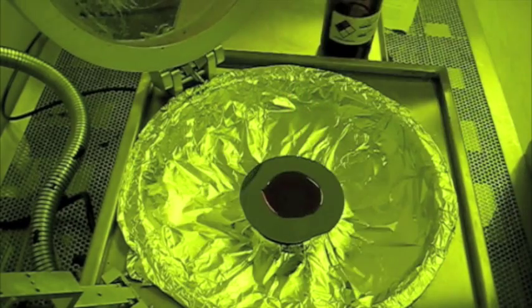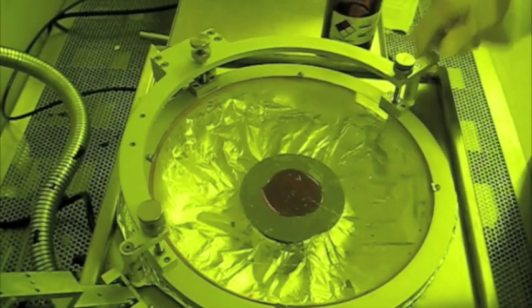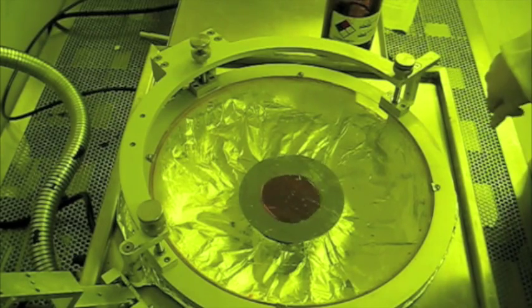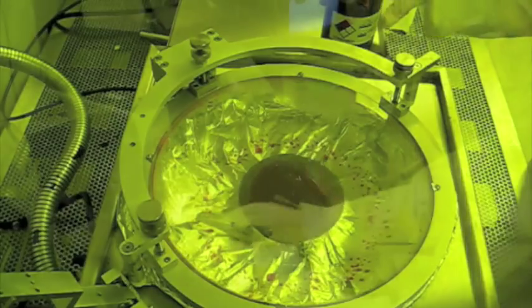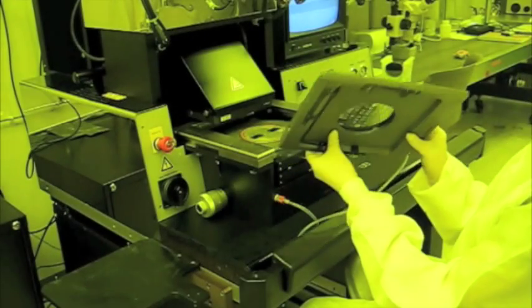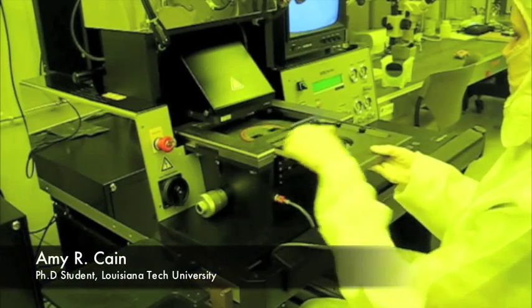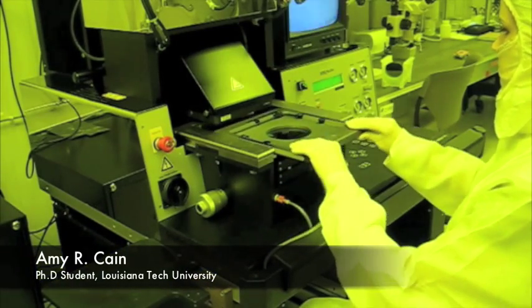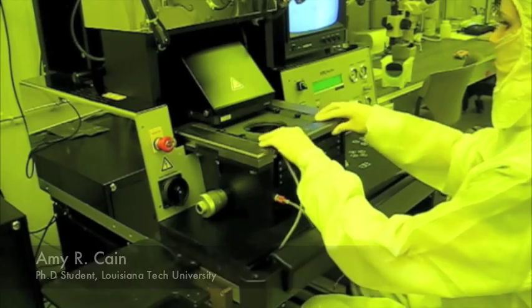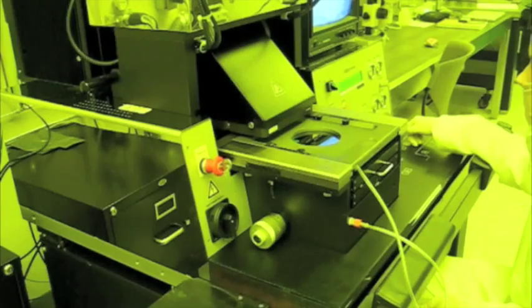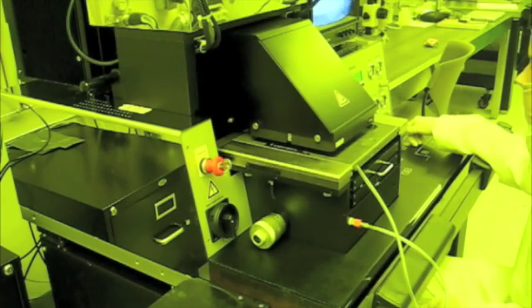The next step is to spin coat 1 micrometer thick photoresist on the surface of the wafer. A mask containing fine features of the heat exchanger is loaded into a mask aligner. The soft baked silicon wafer is loaded and exposed to ultraviolet radiation for 7 seconds.